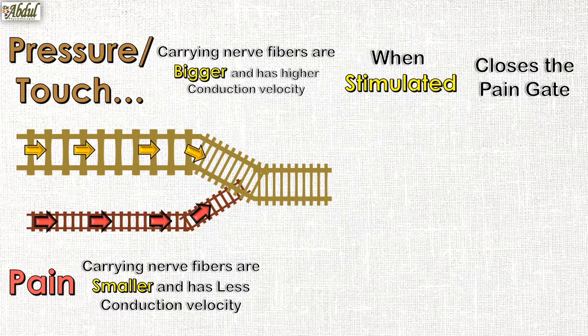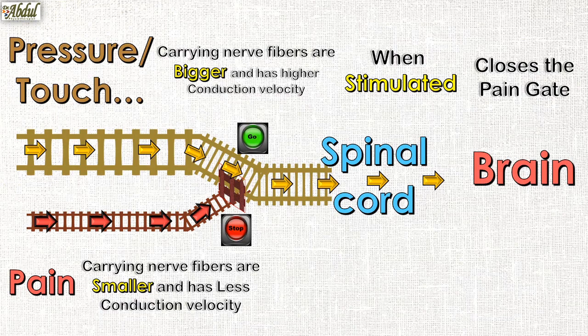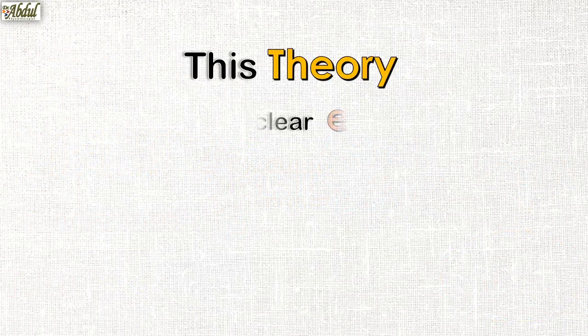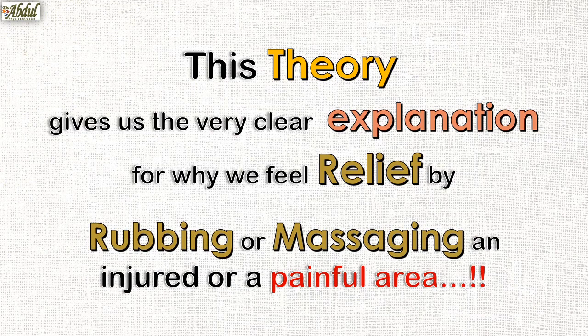When a stimulus passes through the larger nerve fiber — which has higher conduction velocity — it bypasses, crosses, and supersedes the smaller diameter, lesser conduction velocity nerve fibers. It is then perceived as passing through the spinal cord to the brain, and that is how we will not feel pain, as it has been superseded by the pressure and touch sensation carried by the bigger, higher conduction velocity nerve fiber. This theory gives us a clear explanation for why we feel relief by rubbing or massaging an injured or painful area.